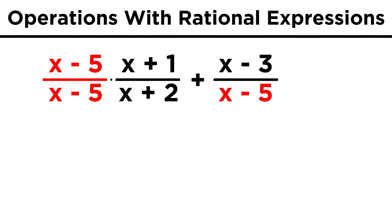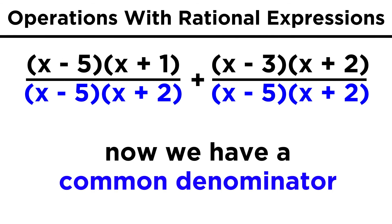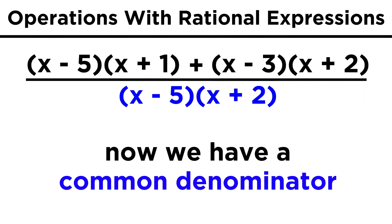We multiply the first fraction by the denominator of the second fraction over itself. We multiply the second fraction by the denominator of the first fraction over itself. That gives us a common denominator, and we are safe to add.